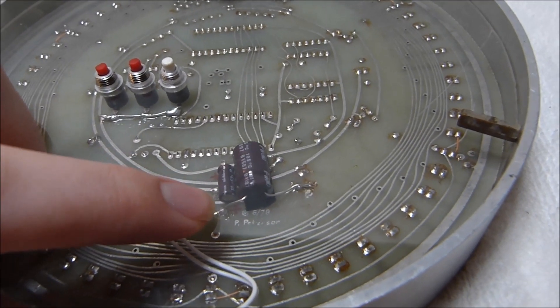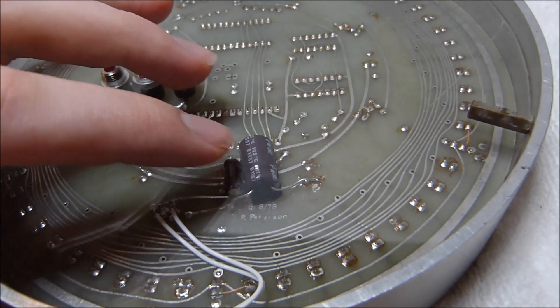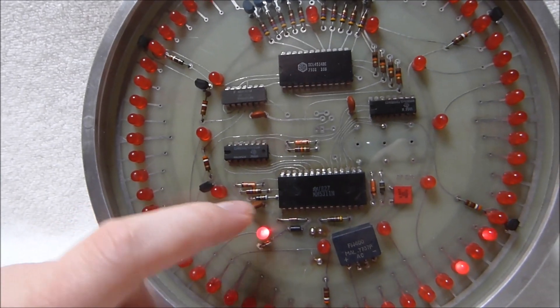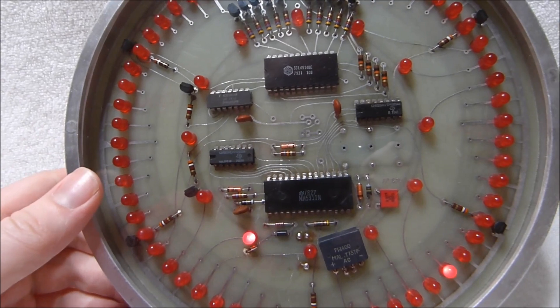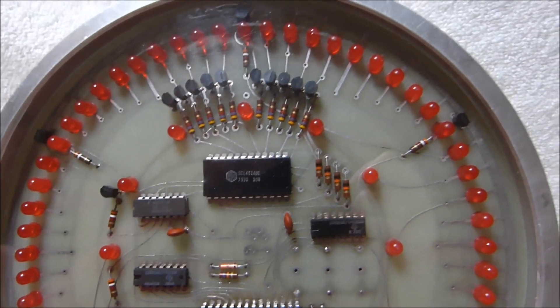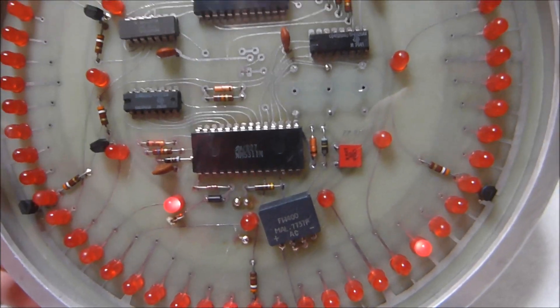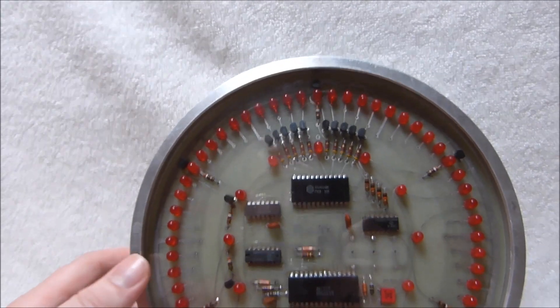You can see it says P Peterson copyright 1978 and most of the chips were built in either 1978 or 1979, which means that the very earliest that this clock was made was 1979. Of course I don't know the exact date it was put together but I'm sure it wasn't too much later than that.